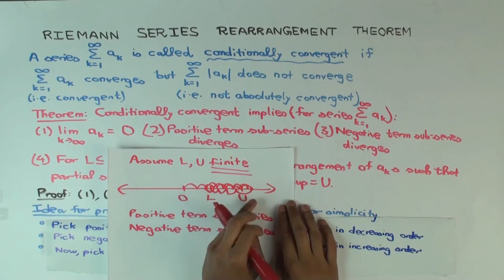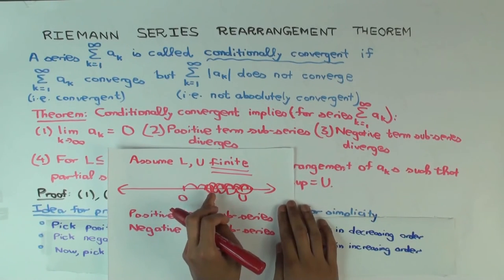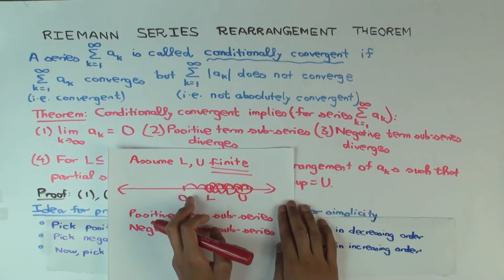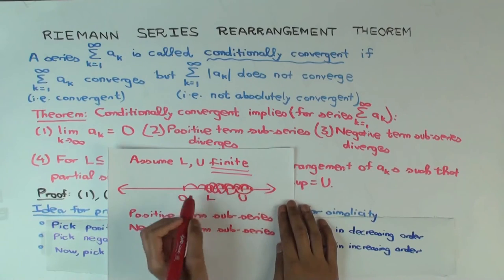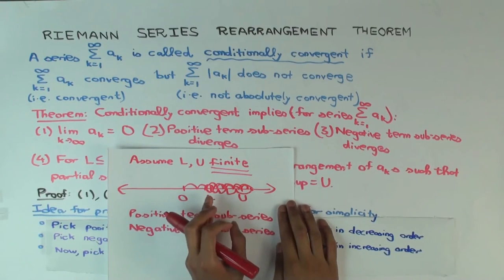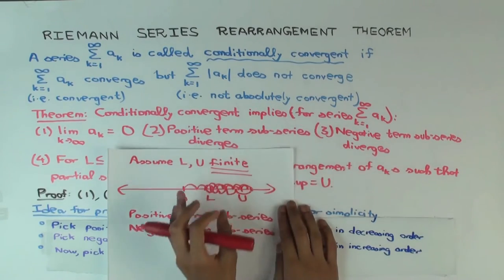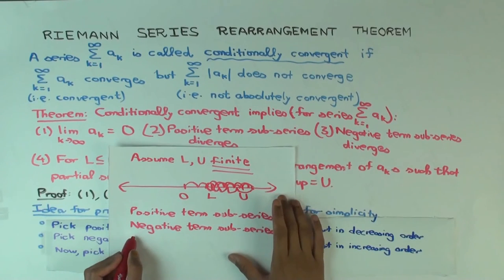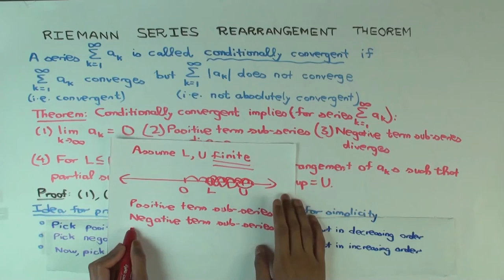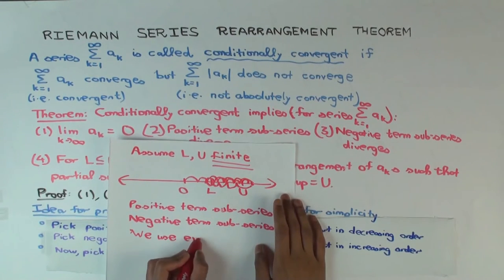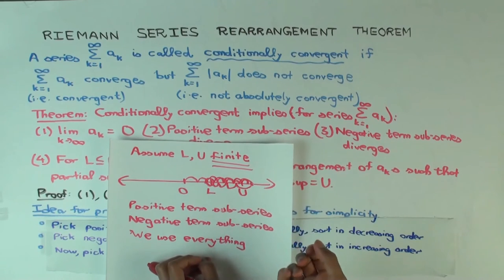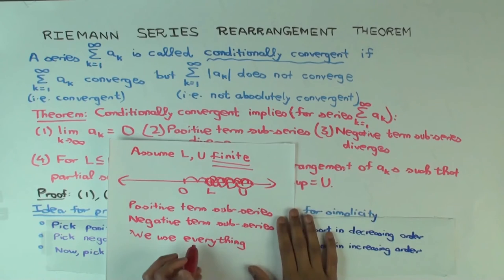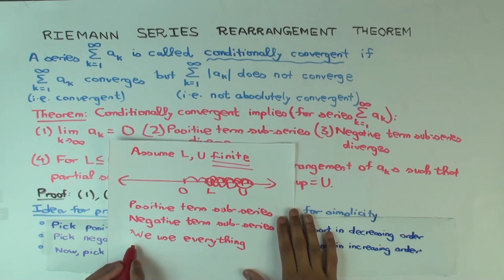Each time you do this back and forth, you use at least one term from the positive subseries going up and at least one from the negative subseries going down, because you're starting left of L and going right of U and L ≤ U. Since you're doing this infinitely many times, you ultimately use every term. So it's a valid rearrangement of the original series — each term used exactly once (or as many times as it's repeated).